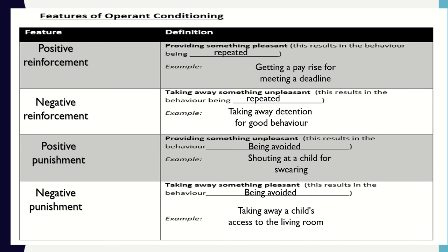Now that we've got those written in, I just want to clarify the examples. Positive reinforcement: getting a pay rise for meeting a deadline encourages you to meet deadlines in future. Negative reinforcement: taking away detention for good behaviour means the good behaviour will be repeated. Positive punishment: shouting at a child for swearing means the swearing will hopefully be avoided. Negative punishment: taking away a child's access to the TV means they'll avoid bad behaviour in future.